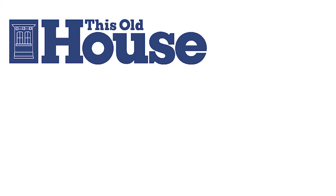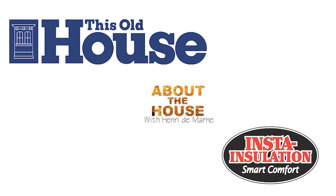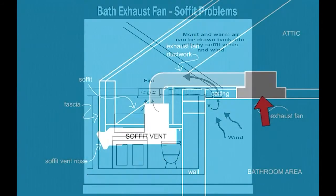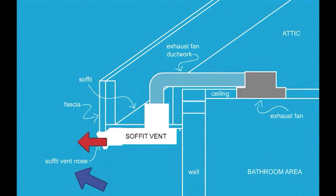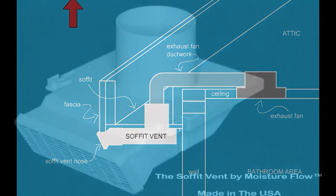Since 1991, Tom Silva from This Old House, Henri DeMarne from About the House, and Alex Schutz from Insta-Installation — these three icons realized the problem costing homeowners billions of dollars each year in remediation caused by improper venting of bathroom exhaust fans. According to these experts, architects, and engineers, properly venting through the soffit is the most efficient and cost-effective way of venting an exhaust fan to the exterior.